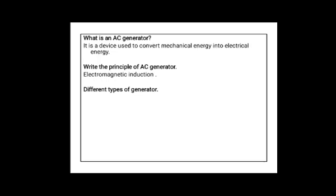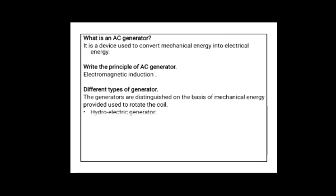Based on the mechanical energy provided to rotate the coil, there are types of generators. The first one is the hydroelectric generator — these are generators in which the coil is rotated by using water falling from a height. Then the thermal electric generator, in which the coil is rotated using steam. The third type is the nuclear power reactor, where the coil is also rotated using steam, but this steam is produced by heating water using nuclear fuel.